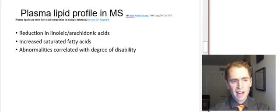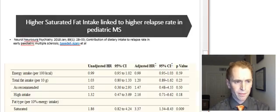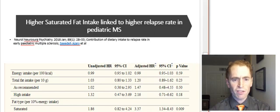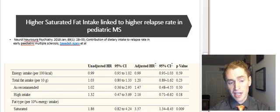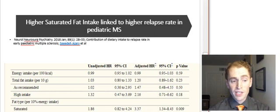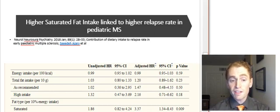This is a study in pediatric MS looking at diet and rate of relapses. If you look at the bottom of the chart, every additional 10% increase in energy intake from saturated fat corresponds with an adjusted hazard ratio of 3.37. In other words, for every 10% increase in energy intake due to saturated fats, there is an over three-fold increased risk of relapses in pediatric MS.